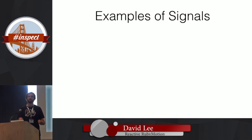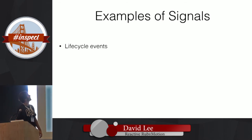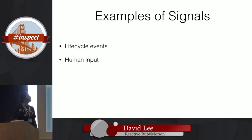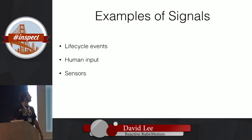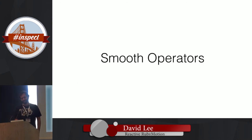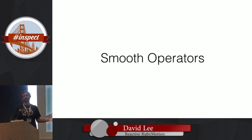So what are some examples of signals now that we have this concept? Lifecycle events: UIApplication events, view controller events — those are signals. Touch events — human input. Sensors: your GPS signal, anything on the device that measures something. File I/O. Network requests. All of these are signals.